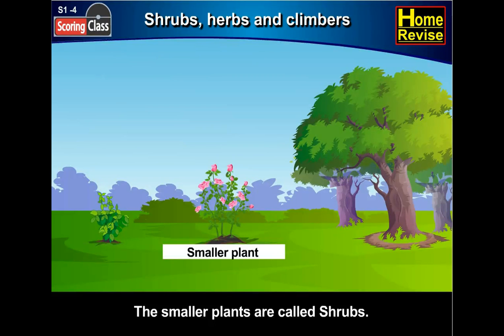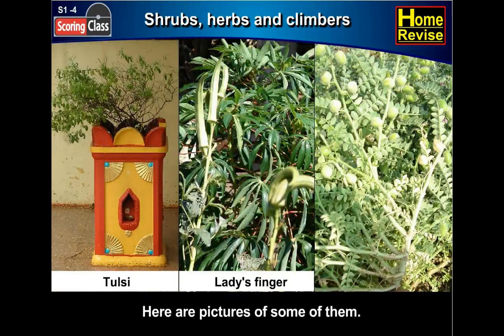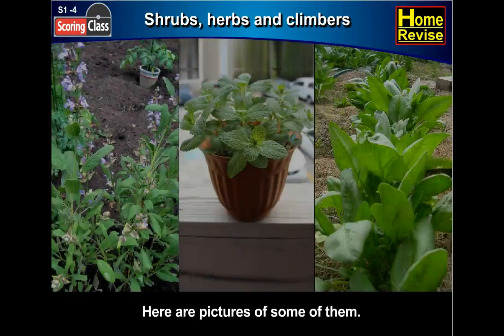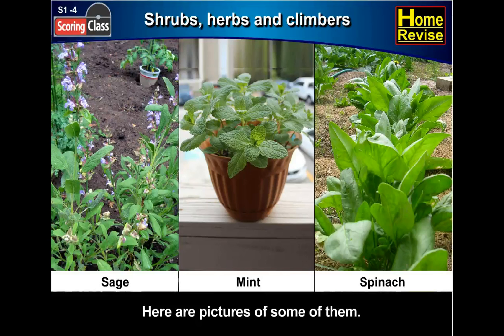Shrubs, herbs and climbers. The smaller plants are called shrubs. Here are pictures of some of them: tulsi, lady's finger, gram. The very small seasonal plants are called herbs. Here are pictures of some of them: sage, mint, spinach.